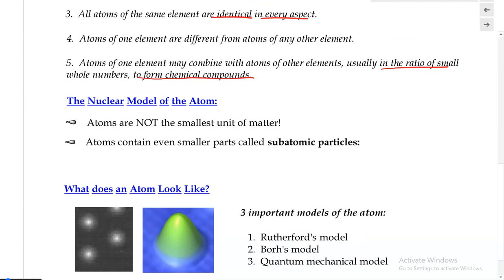And now, the nuclear model of the atom. According to this nuclear model of the atom, it turns out that atoms are actually not the smallest unit of matter. But they consist of even smaller parts called subatomic particles. And hopefully you are already familiar with these three subatomic particles.